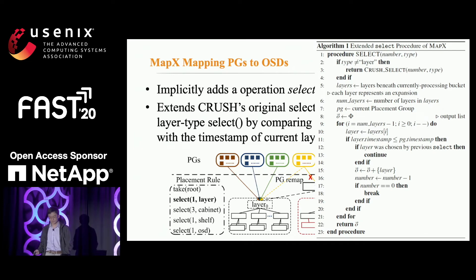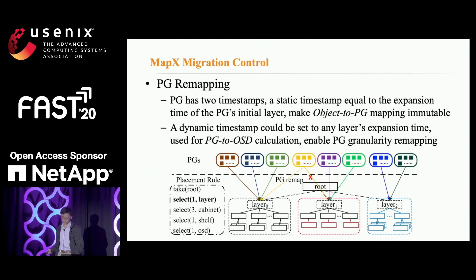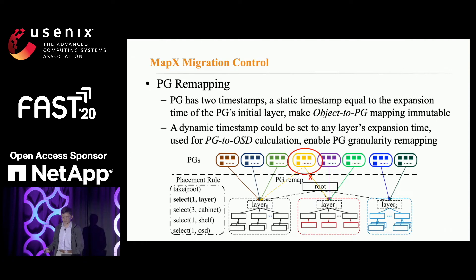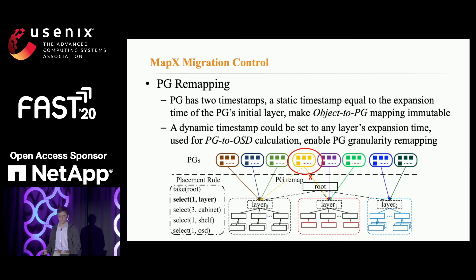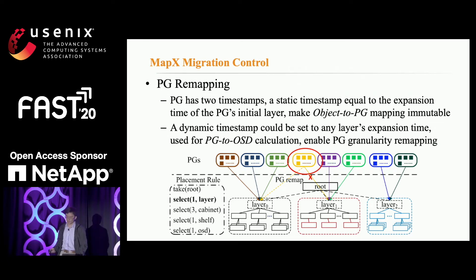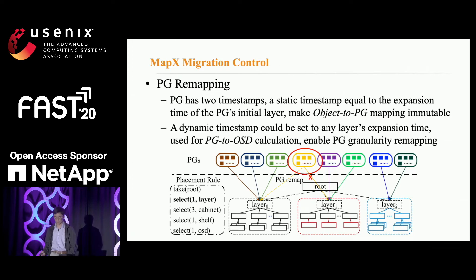In practice, each expansion should independently satisfy the F-way replication policy, so PGs can be mapped to a list of OSDs in one layer. MapX supports controlled object data migration by dynamically mapping PGs. Each PG has two timestamps: a static timestamp T_PGs, equal to the expansion time of the PG's initial layer, and a dynamic timestamp T_PGD, which can be set to any layer's expansion time. The mapping from PGs to layers is performed by comparing the PG's dynamic timestamp to the layer's timestamps. Consequently, a PG can be remapped to any layer by manipulating the dynamic timestamp, which is notified to all OSDs and clients via incremental map updates.